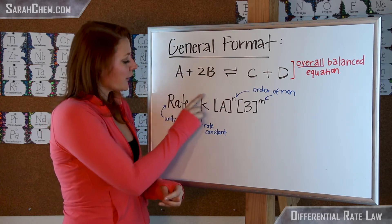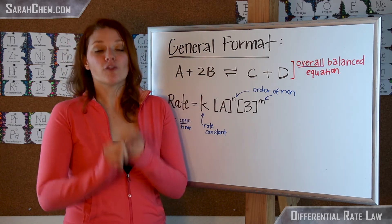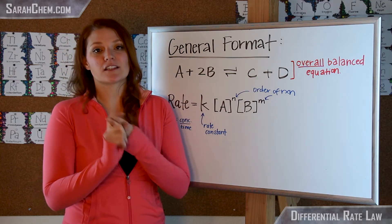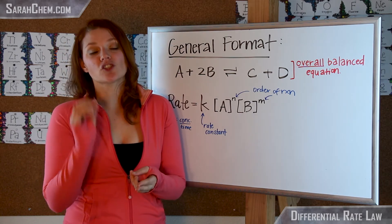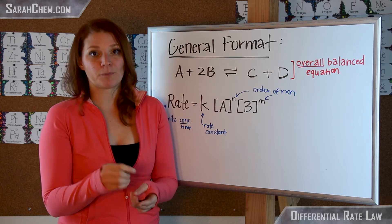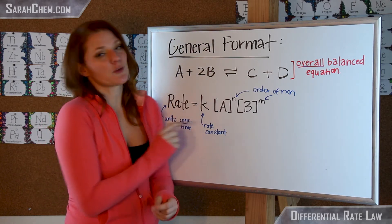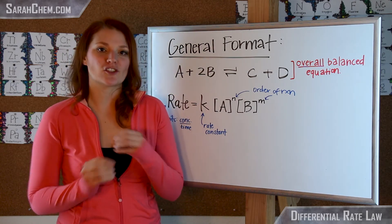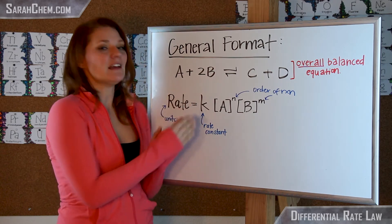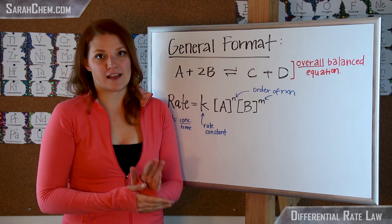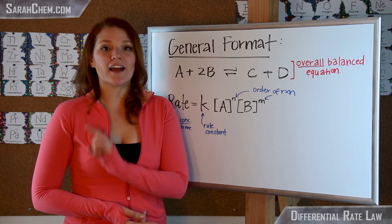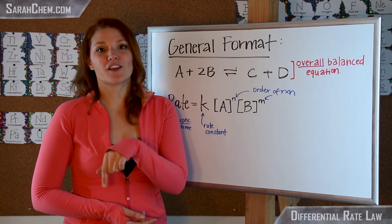So now this here is going to be a constant for a particular reaction at a given temperature. So if you change the temperature of a specific reaction, you will change what that rate constant is. Additionally, when you're talking about the rate constant, its units are going to change. So the units of k depend on what the overall order of the reaction is. Now if you want a quick formula on how to do that, you can go ahead and click the link to the video in the description.